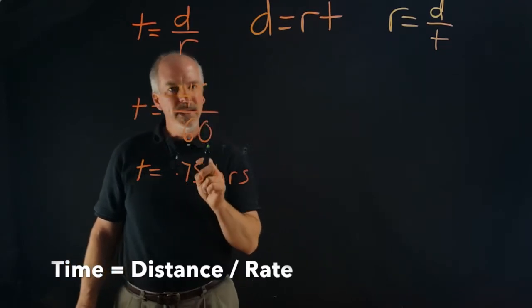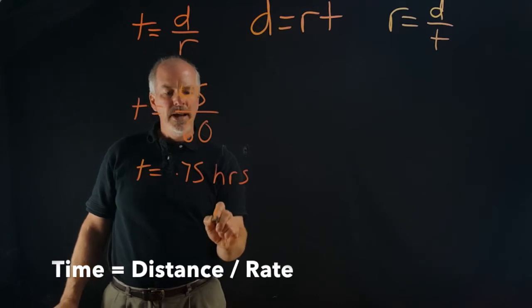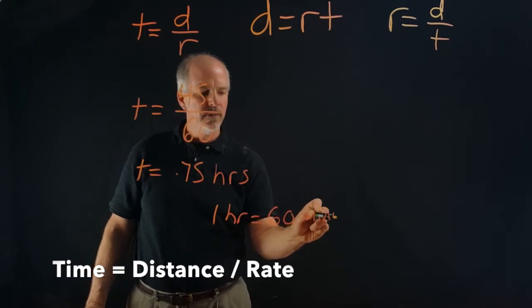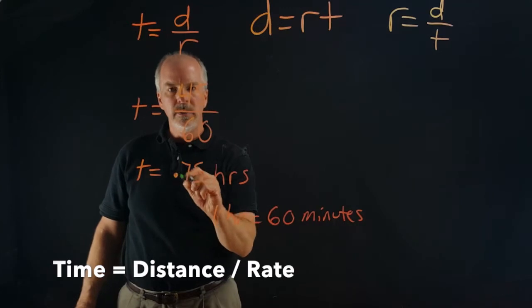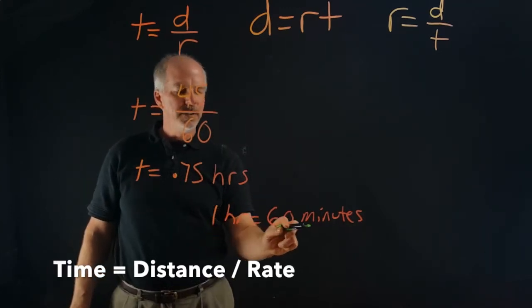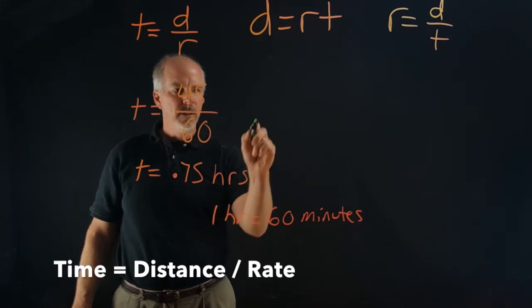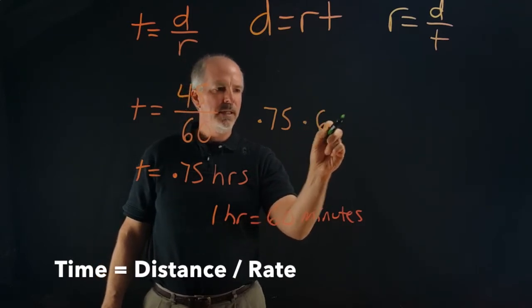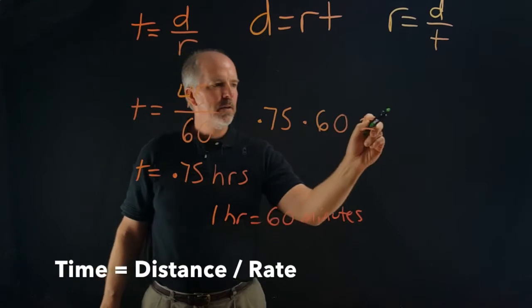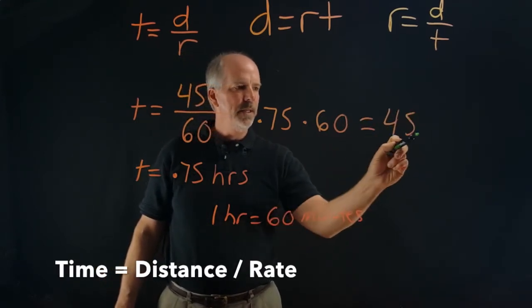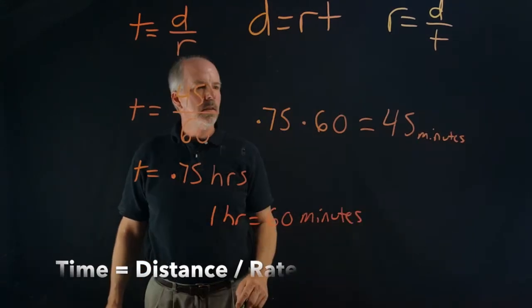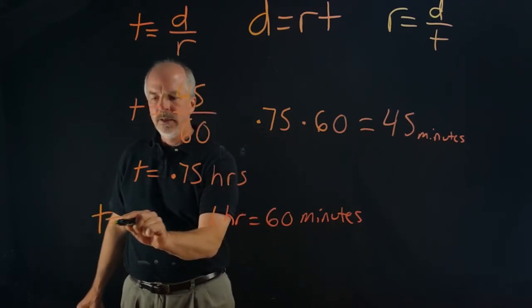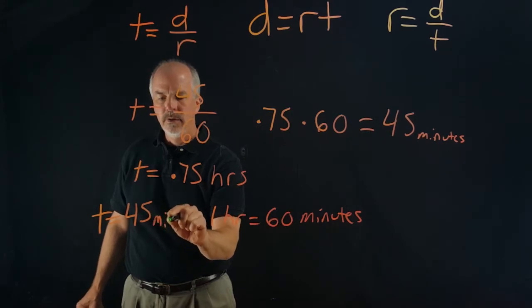The problem asked for minutes, so we need to convert hours to minutes. One hour equals 60 minutes, so if we multiply 0.75 times 60, we get 45. So T equals 45 minutes.